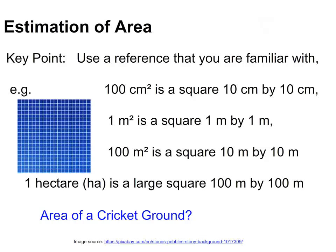What areas might you be familiar with that you could use to compare? A square 10cm by 10cm has an area of 100 square centimetres. 10 square metres is about the area of an average bedroom. A two-car garage has an area of about 50 square metres. When talking about land area, a hectare is a large square, 100 metres by 100 metres.